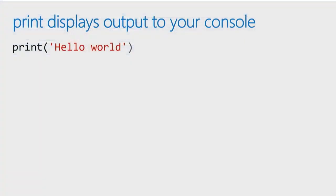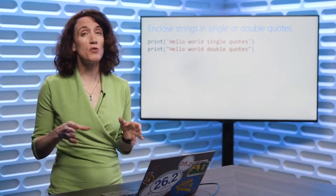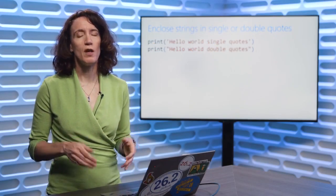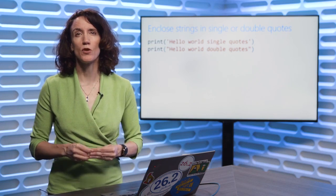Let's get into some coding. We're going to start off with the print statement, which is typically where we start with most programming languages. When you want to print output to the console to display a message either to a user or to yourself — maybe because you're debugging your code — we use the print statement in Python. It's simply the command print, then in parentheses the string or the message you want to display. You can contain it in single quotes or it will also work inside double quotes. It's one of the unusual things about Python: you can choose either single or double quotes to enclose your strings.